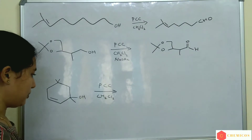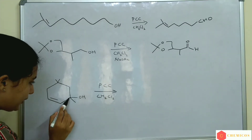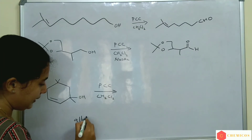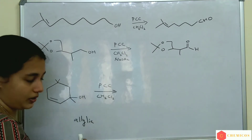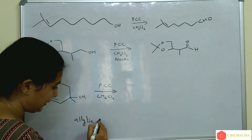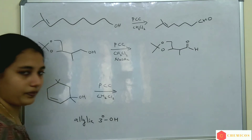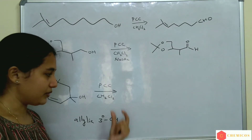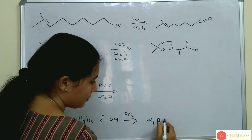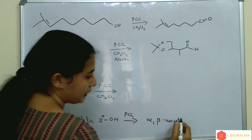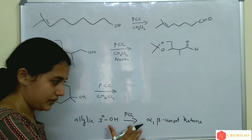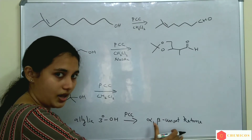Third example — this is an exceptional case. This is a tertiary alcohol, specifically an allylic tertiary alcohol. An allylic carbon means a carbon attached to a double-bonded carbon. So this is an allylic tertiary alcohol. When an allylic tertiary alcohol is treated with PCC, it gives an alpha-beta unsaturated ketone.